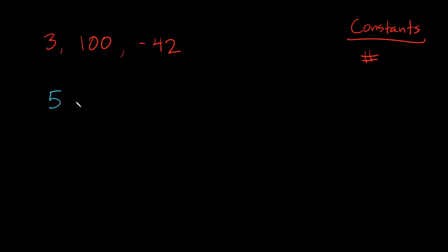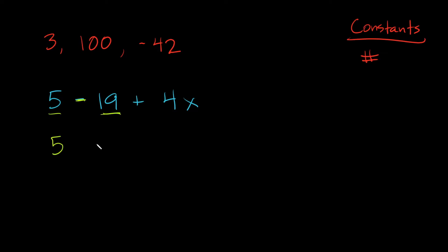So if I gave you a problem like 5 minus 19 plus 4x, and I asked you to identify the constants — is 5 a constant? Yes, because it's just a number by itself. Is 19 a constant? Yes, but something important: this isn't just 19, this is negative 19. We always have to take into account the sign next to it. So the constant is negative 19. And 5 is positive 5. Now is 4x a constant? No, because it has a number but also a variable attached to it. That's what's known as a coefficient.